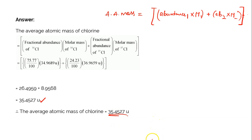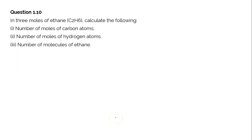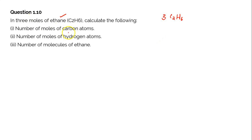That's why in the periodic table you will find the atomic mass of chlorine to be 35.5. This is an important question — please do practice it. Let's go on to question number 1.10. The question says: in 3 moles of ethane (C2H6), calculate — (a) the number of moles of carbon atoms, (b) the number of moles of hydrogen atoms, and (c) the number of molecules of ethane.